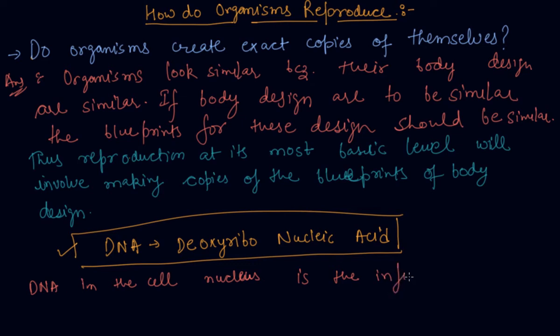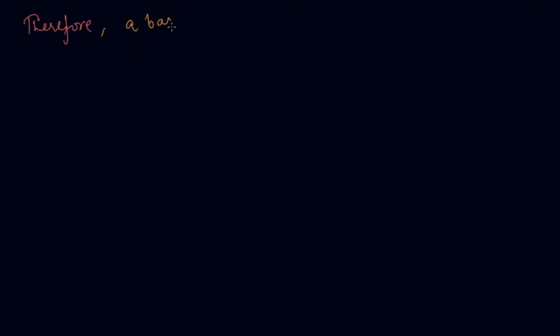DNA is the information source for making proteins. If the information is changed, different proteins will be made. Different proteins will eventually lead to altered body design. Therefore, a basic event in reproduction is the creation of a DNA copy.